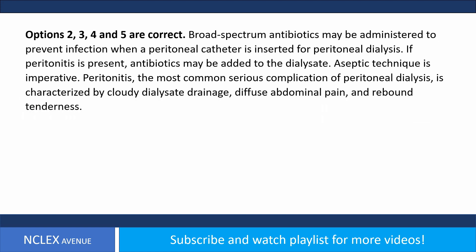Answer: options two, three, four, and five are correct. Broad-spectrum antibiotics may be administered to prevent infection when a peritoneal catheter is inserted. If peritonitis is present, antibiotics may be added to the dialysate. Aseptic technique is imperative. Peritonitis, the most common and serious complication of peritoneal dialysis, is characterized by cloudy dialysate drainage, diffuse abdominal pain, and rebound tenderness.